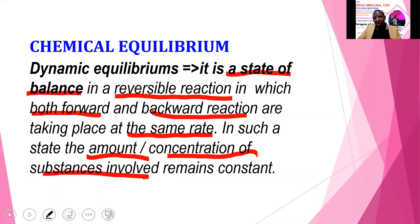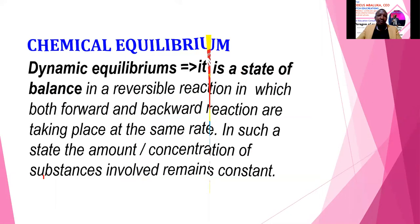From this, we get two characteristics of dynamic equilibrium: first, both forward and backward reactions are occurring at the same rate; and second, the concentration of the substances involved remains constant.